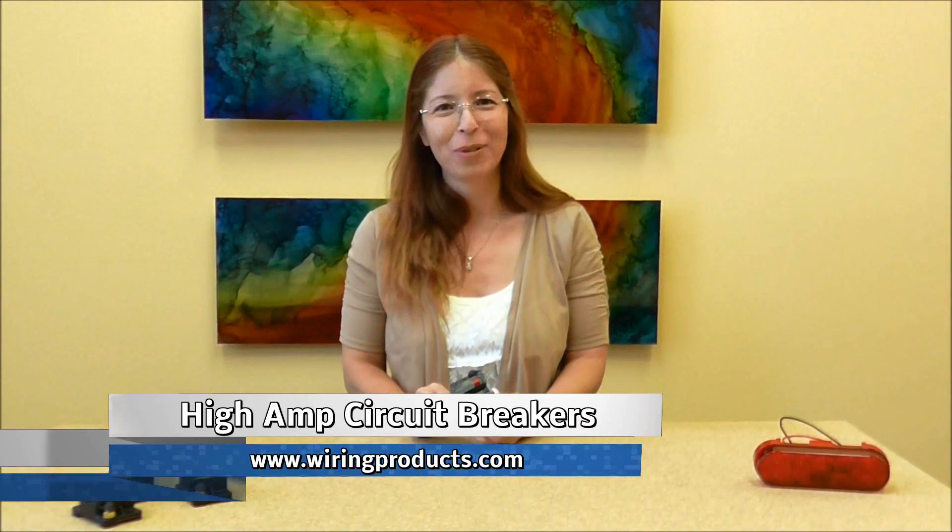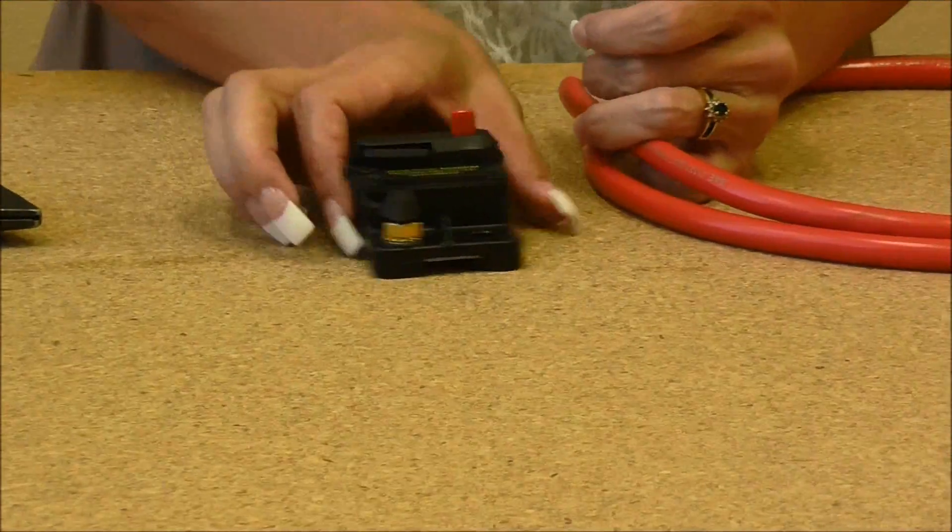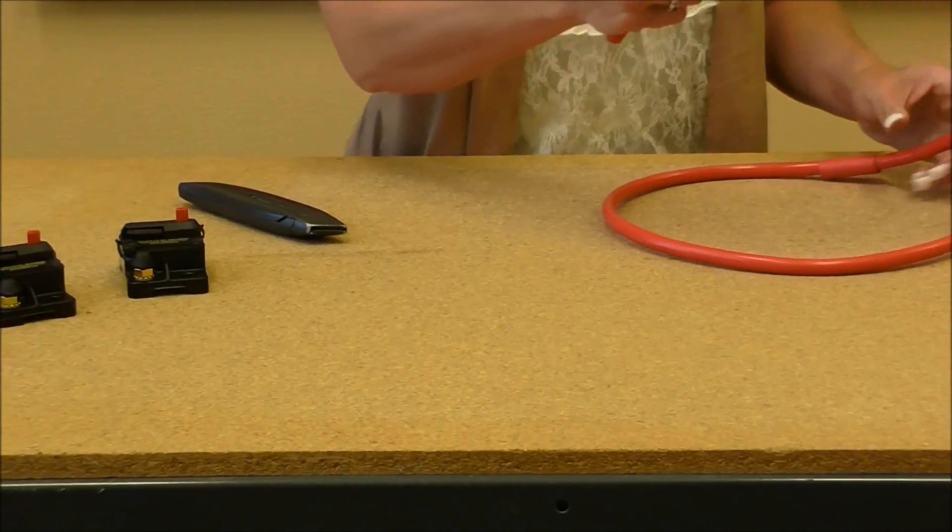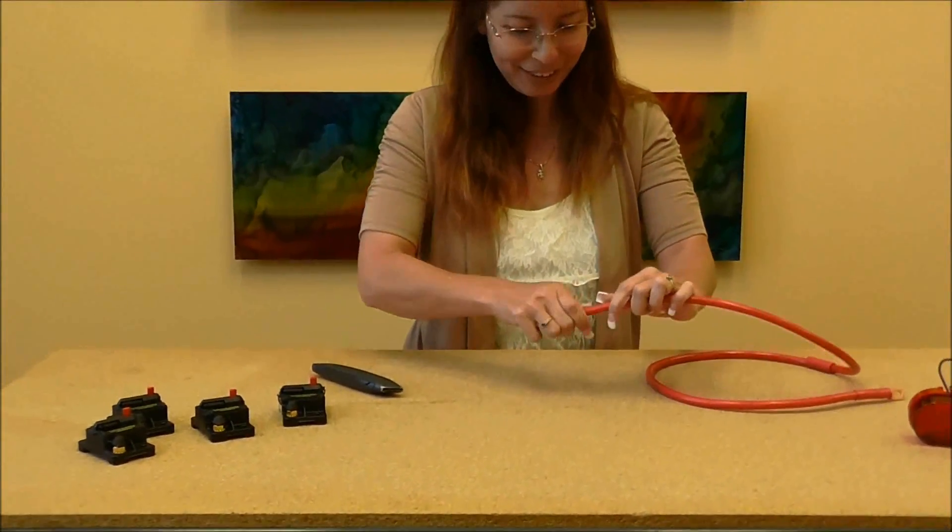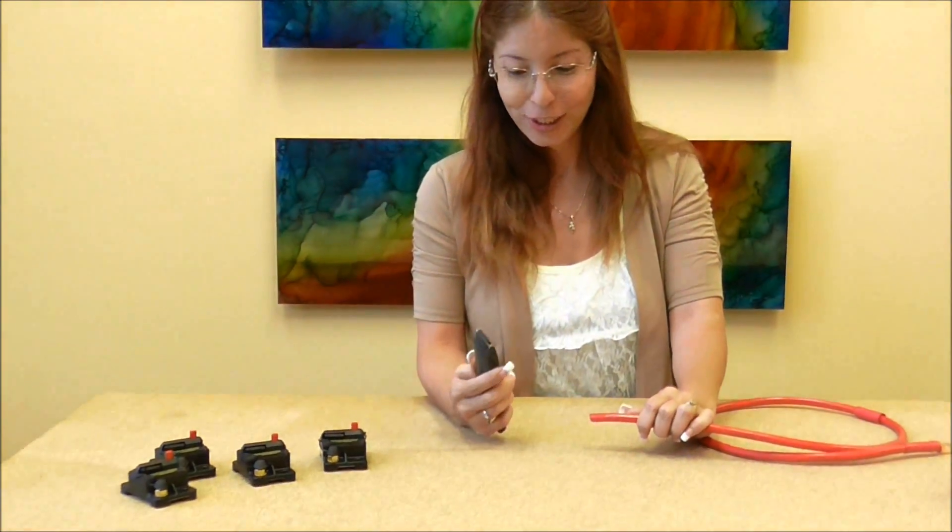Welcome back to Wiring Products. Today we're going to work on high amp circuit breakers. First off, I'm going to put my circuit breaker to the side. This is going to be somewhat of a challenge because I'm going to use a box cutter to cut through the jacket on the battery cable.